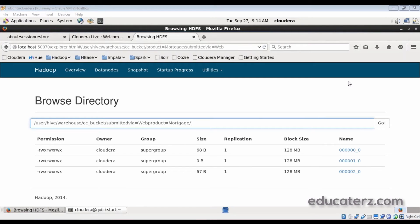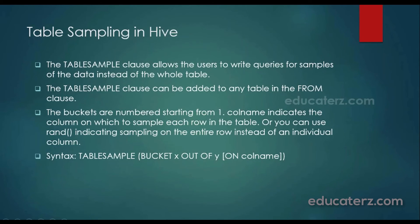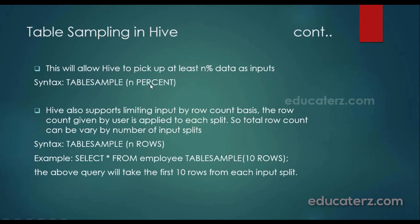Hive also has a table sample clause for sampling. Using TABLESAMPLE(10 PERCENT) will display 10 percent of the data from your input. Similarly, you can specify the number of rows — for example, TABLESAMPLE(10 ROWS) will display 10 rows from each and every input split. The query is a normal SELECT statement: SELECT * FROM employee TABLESAMPLE(10 ROWS).